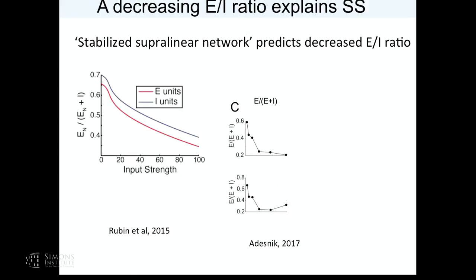As Ken pointed out, there's a prediction from the stabilized superlinear network that the E/I ratio should drop — and indeed that's what we confirmed. The same relationship holds in cats and in mice between spike rate and membrane potential. So the network of V1 in mouse looks to act very much like a stabilized superlinear network. This really seemed to add further support that a mouse is a little cat is a little monkey — everything you saw in cats, you could see in mice.